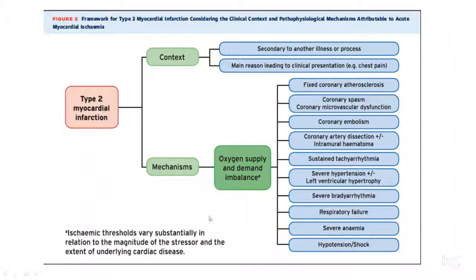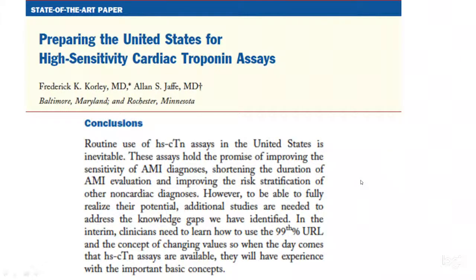Type 2 MI is when you have an imbalance between the demand and supply of oxygen, and there are many causes. A coronary embolism can lead to type 2 MI. Sustained tachyarrhythmias — such as sustained ventricular tachycardia or ventricular tachycardic storm — will lead to demand ischemia and consequently type 2 myocardial infarction.